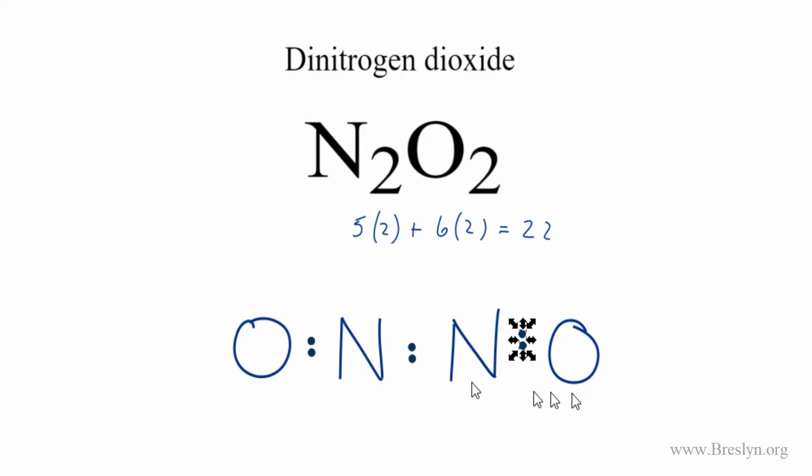Next, we'll go around the outside of the atoms to complete the octets on the oxygens. At this point, we've completed the octets for the oxygens, and we've used a total of 18 valence electrons. So we have four more left.